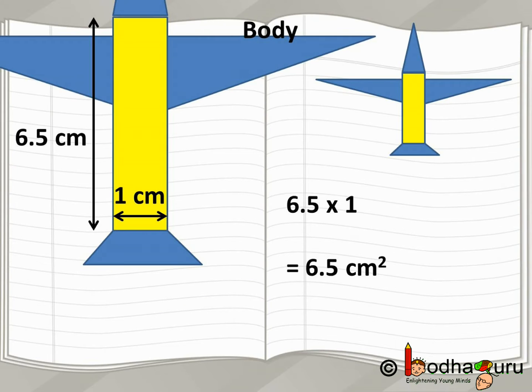Now, let us consider this quadrilateral body and it is a rectangle. So, length here is 6.5 cm and breadth is 1 cm. So, the area is length multiplied by breadth which becomes 6.5 multiplied by 1 which is equal to 6.5 square centimeters.